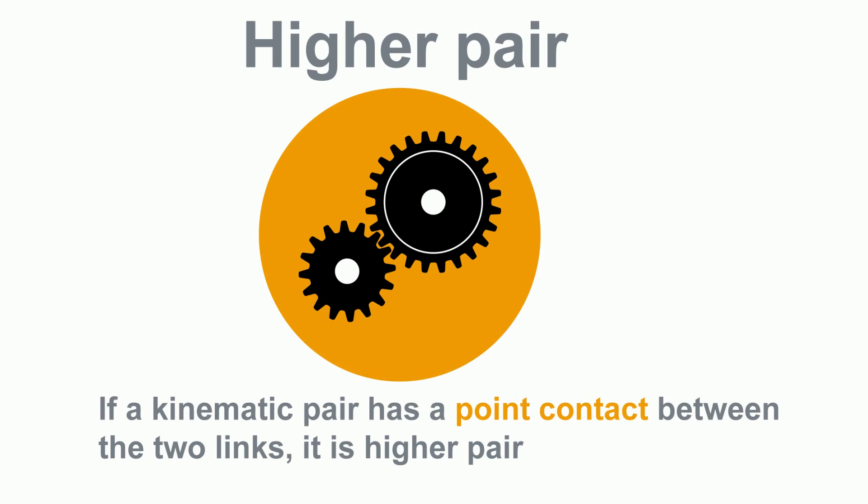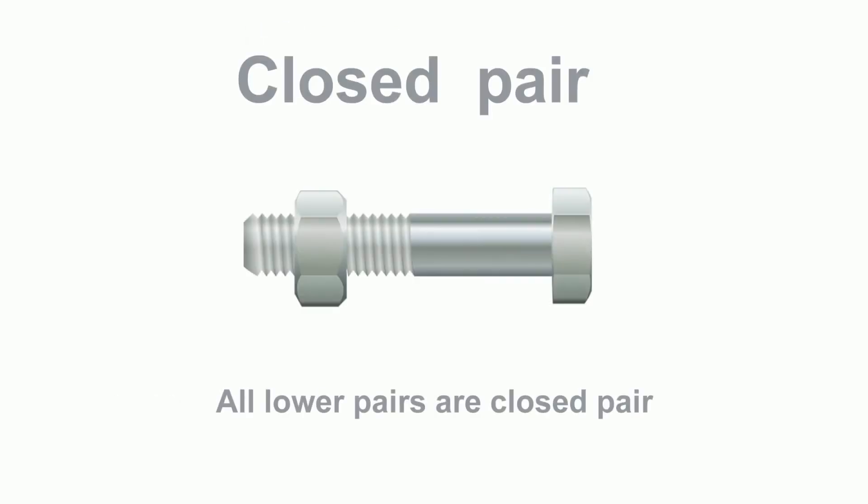Eight, cam and flat follower is a higher pair due to having a line or point contact. Nine, all lower pairs are closed pairs.